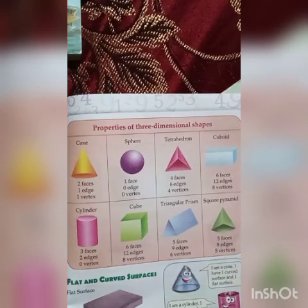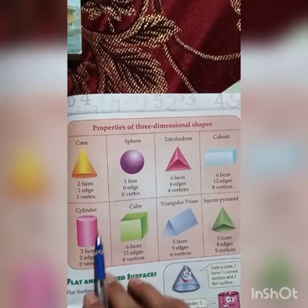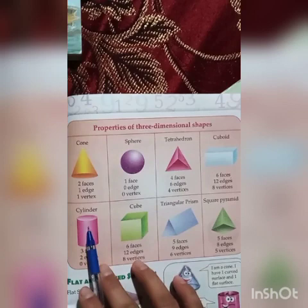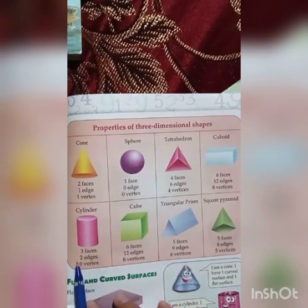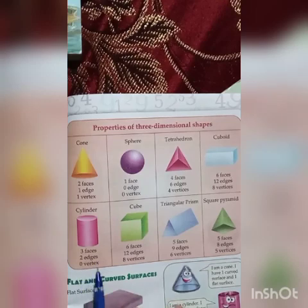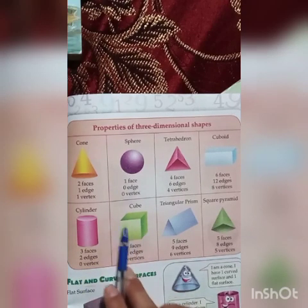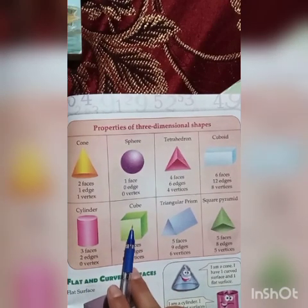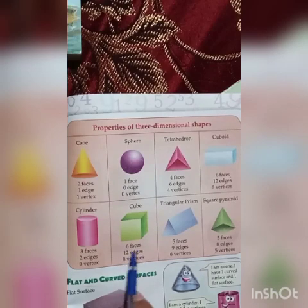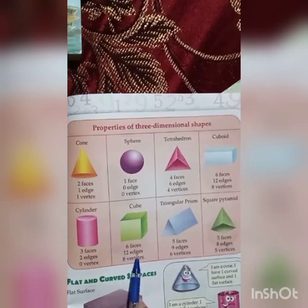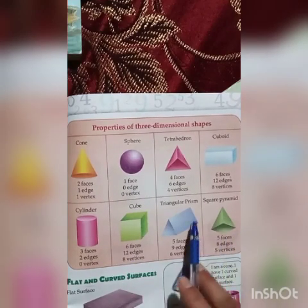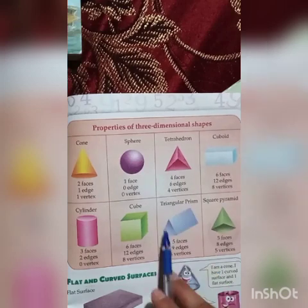Okay students. Cylinder has three faces, two edges, and zero vertices. Cube has six faces, twelve edges, and eight vertices. This is a triangular prism.